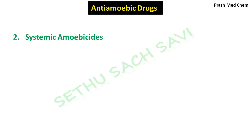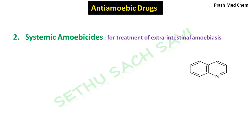Next, we will move to the systemic amoebicides. Systemic amoebicides mainly act on amoeba present outside the intestine, such as liver, as well as on the walls of the intestine. Therefore, systemic amoebicides can be used for the treatment of extra-intestinal amoebiasis. Now, again, this is a heterocyclic ring, quinoline.